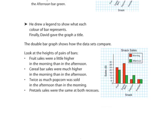The fruit sales were a little higher in the morning than in the afternoon. Cereal bar sales were higher in the morning as well. Twice as much popcorn in the afternoon, and pretzels were the same at both recesses. You could also talk about what was the most popular, well most popular was cereal bars in the morning, but overall it appears fruit was the most popular. And we could be more specific and take a look at the amounts at each column and tell the difference.